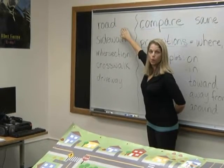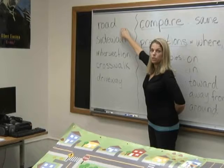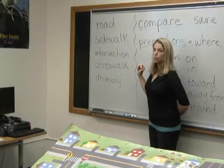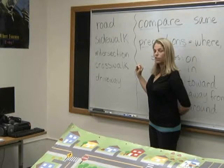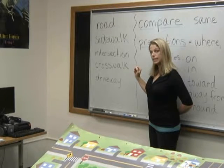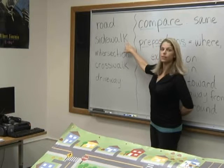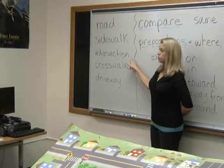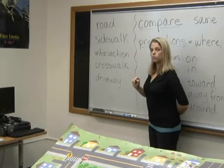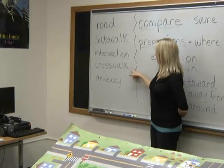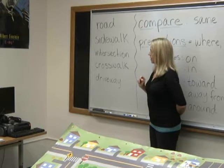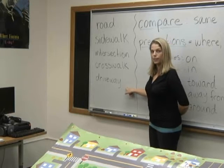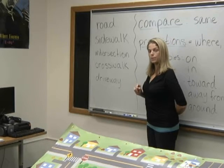Now let's review the words to know again looking at the board. Road: a place you can get from one spot to another by car. Many words for road include highway, interstate, avenue, or street. Sidewalk: the place you can walk beside the road. Intersection: where two roads cross. Crosswalk: where you can cross the road safely. Driveway: a short road that goes to people's houses.